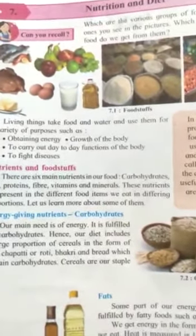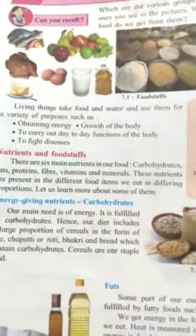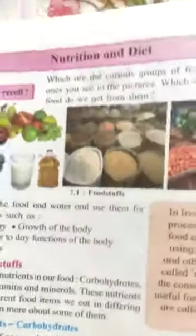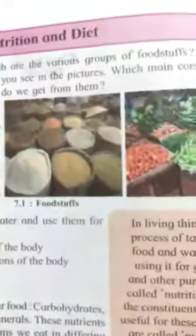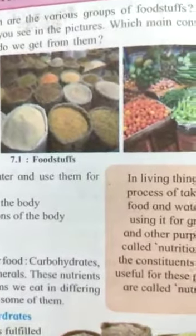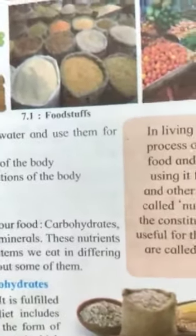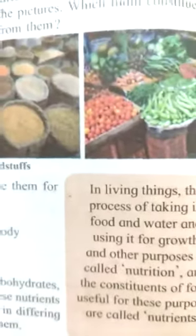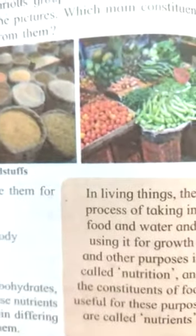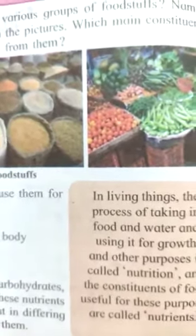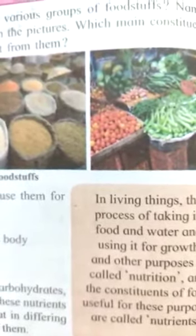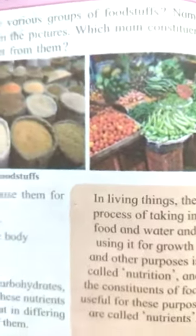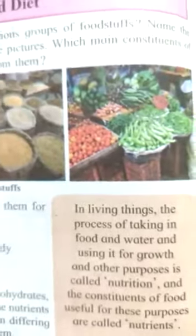You eat different types of foodstuffs. Now, nutrients and foodstuffs — there are 6 main nutrients in our food. In 5th grade we studied proteins and vitamins. So there are 6 main nutrients: carbohydrates, fats, proteins, fibres, vitamins and minerals. These nutrients are present in different food items.